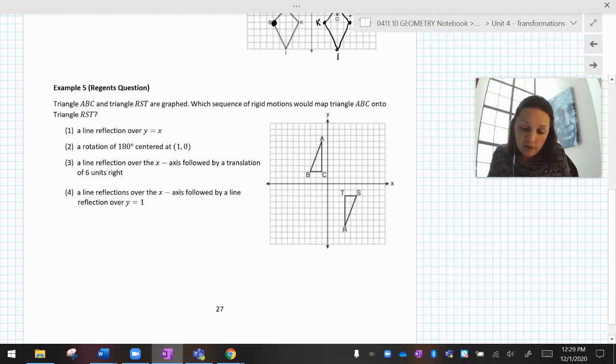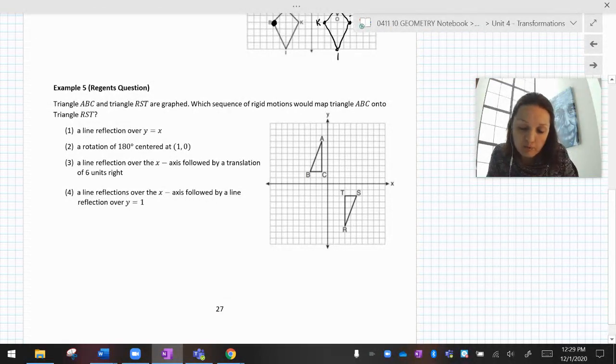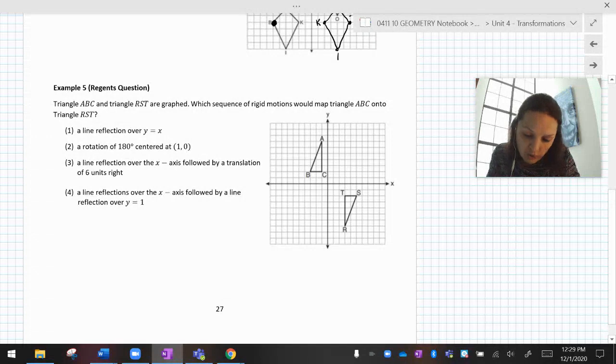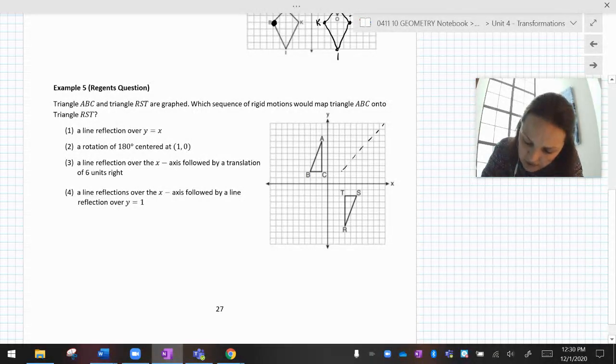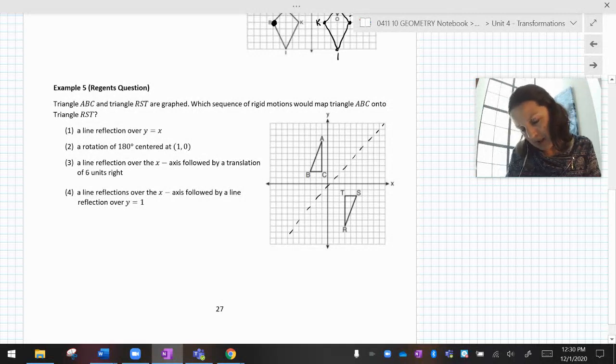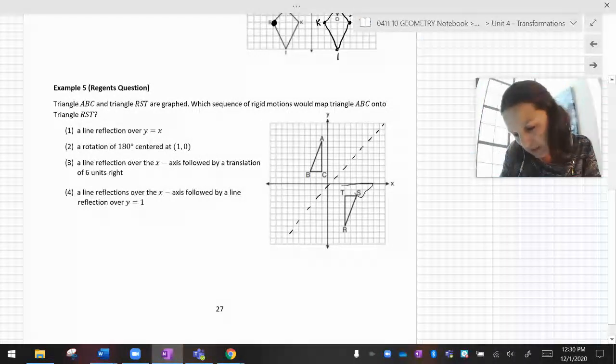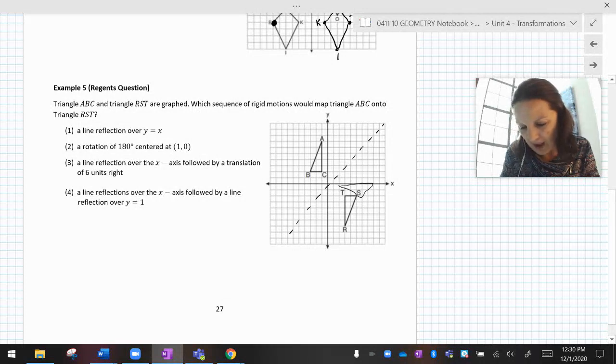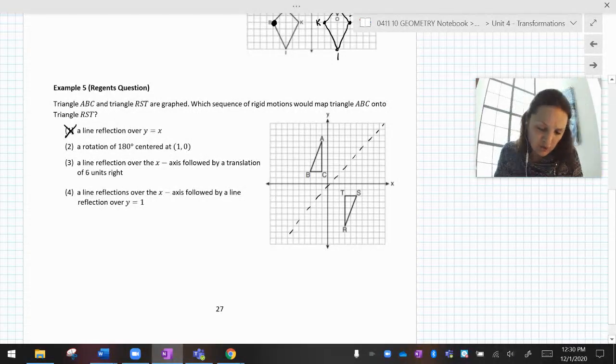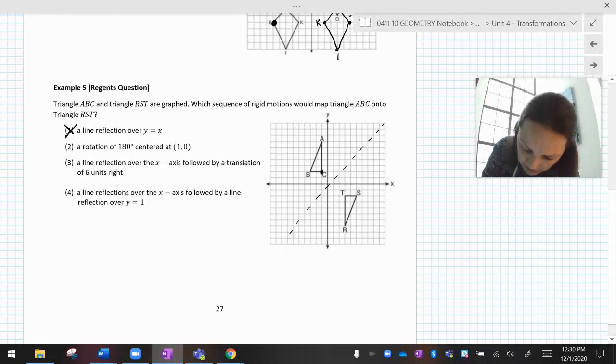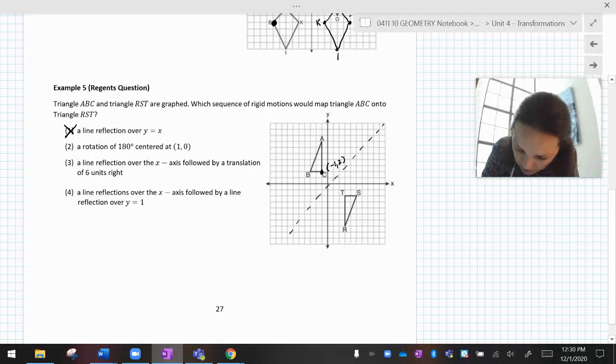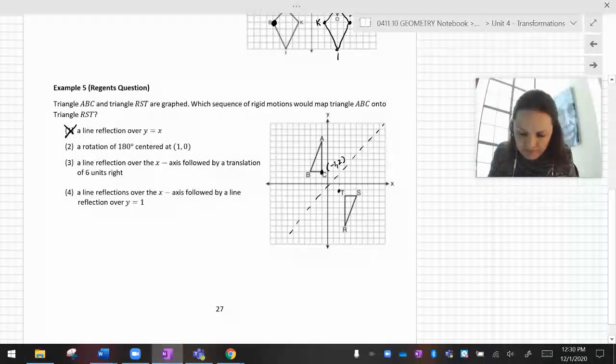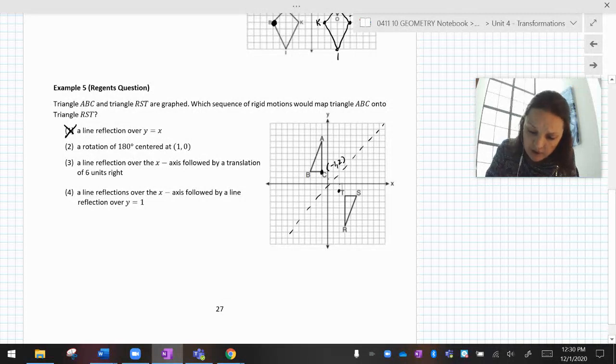And then last but not least, this is a Regents question. It said, which sequence of rigid motions would map triangle ABC onto triangle RST? Okay. So what would we do? A reflection over y equals x. Well, let's see. Y equals x is this thing. If I like tilt my head and look at it, if I reflected that over, it would be like that. No, that's definitely not a reflection over y equals x. So that's not true. Another way to test that would be to say, well, if I reflect over y equals x, the coordinates flip-flop. So if I started with the point (-1, 2), then I would end up, if I flip over y equals x, with the point (2, -1). And that's not on this. So y equals x, you are not the answer.